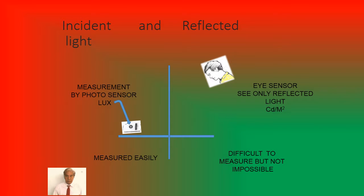The incident and reflected light are two parts which are to be sensed. The incident light is measured by a photocell, but naturally our eye senses the reflected light from the surface of the task. Therefore it is difficult to measure the luminance which is measured by eye, but it is easier to measure the incident light on a surface.